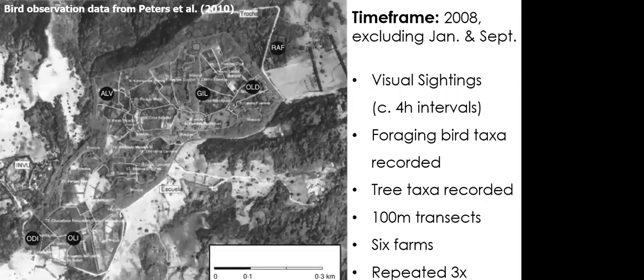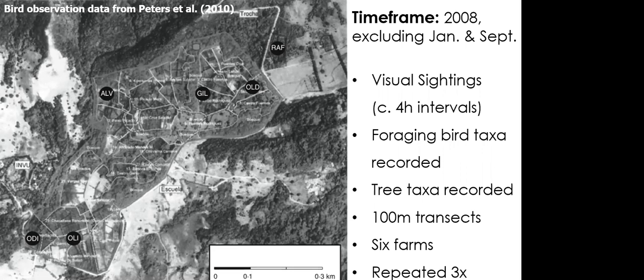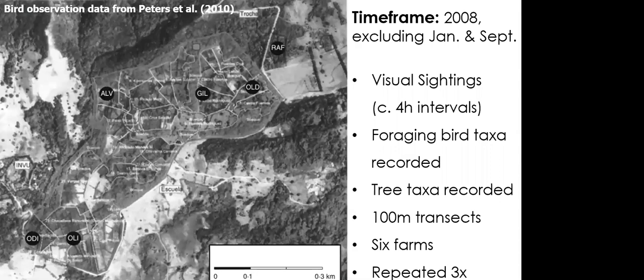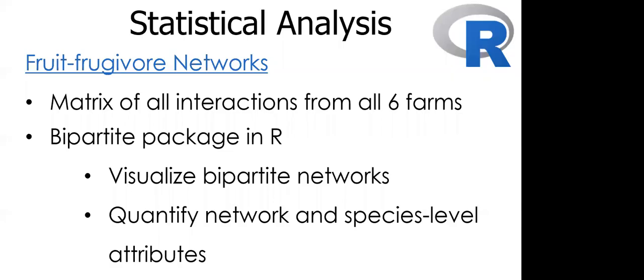Bird observation data was taken from Peters et al. 2010 in order to determine the seed dispersal network structure. Data were acquired using visual sightings of birds foraging on fruit. Foraging bird taxa and corresponding tree taxa were recorded in four-hour timed intervals. All observations occurred along a 100 meter transect in six farms and were repeated three times per month each month, excluding January and September, during the year 2008.